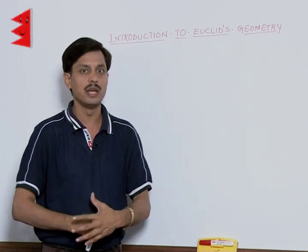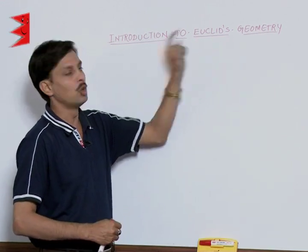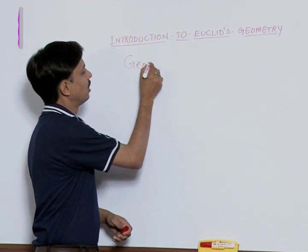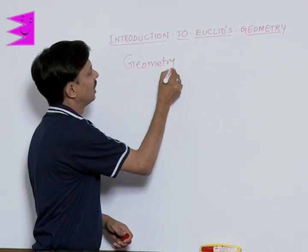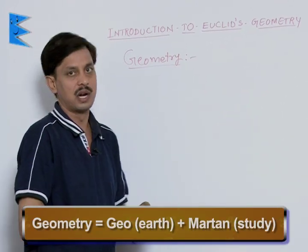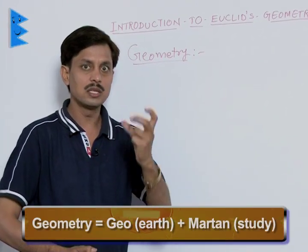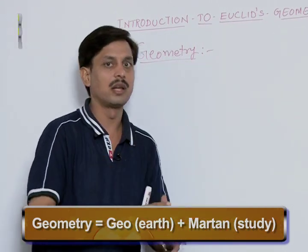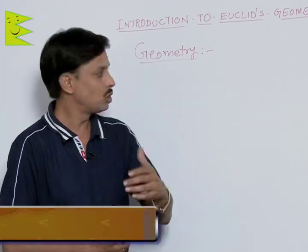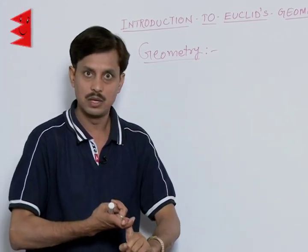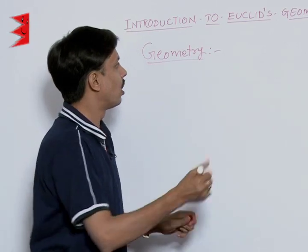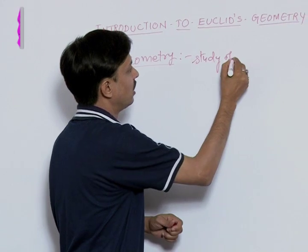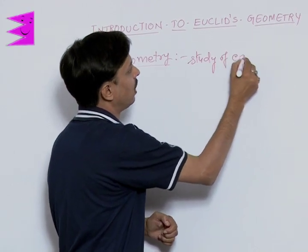The first question raised: what is geometry? The word geometry is taken as geo plus martin — geo means earth and martin means study. So geometry means study of earth. That is, study of earth is known as geometry.